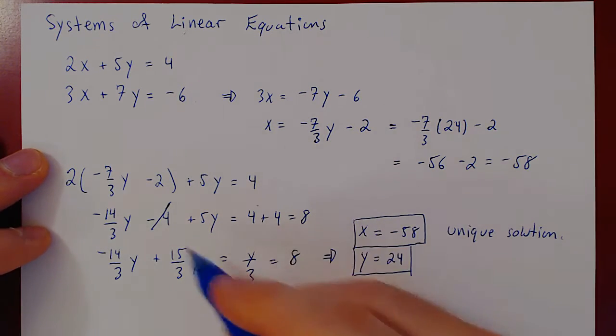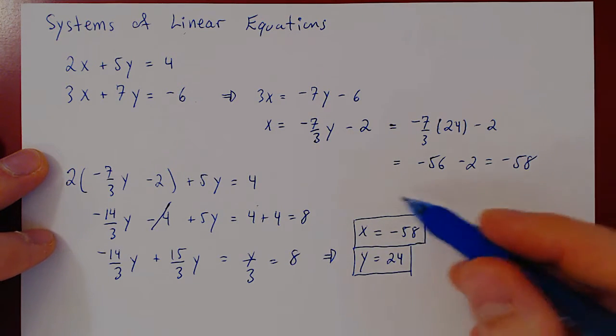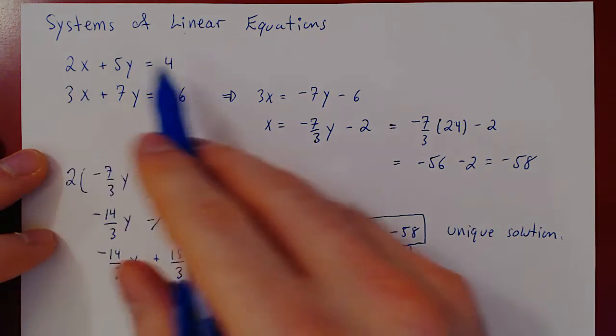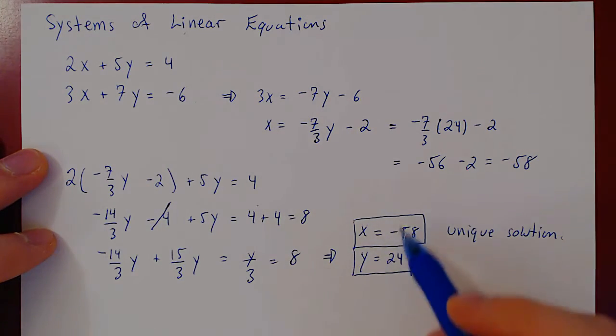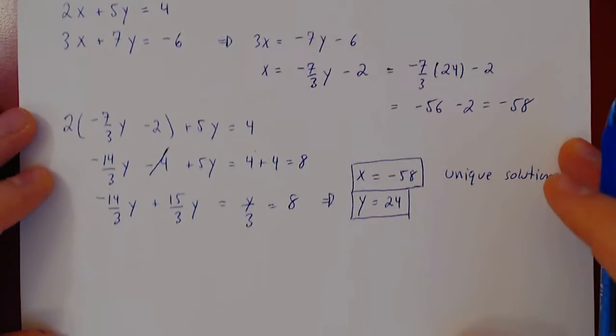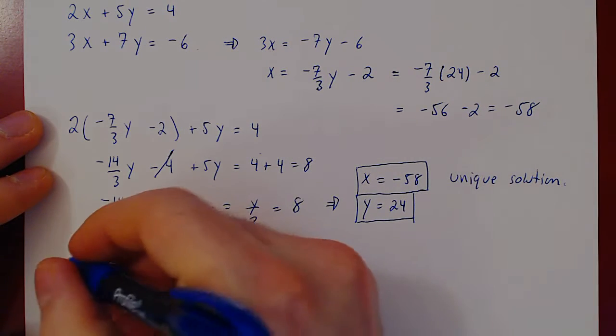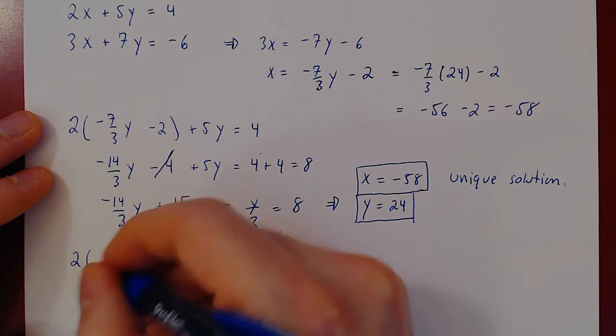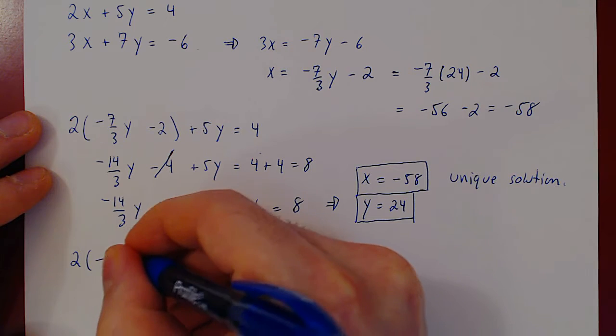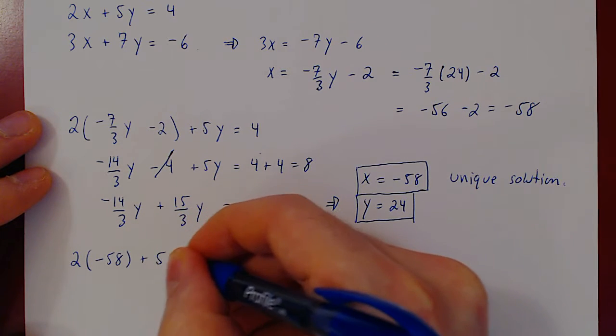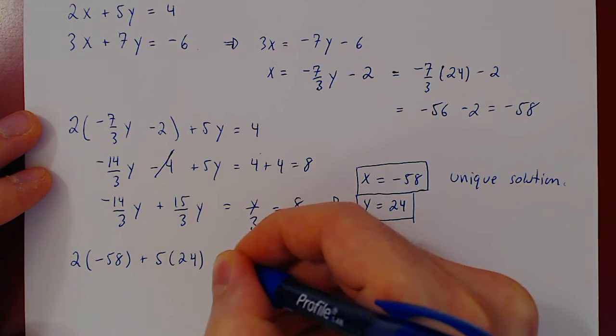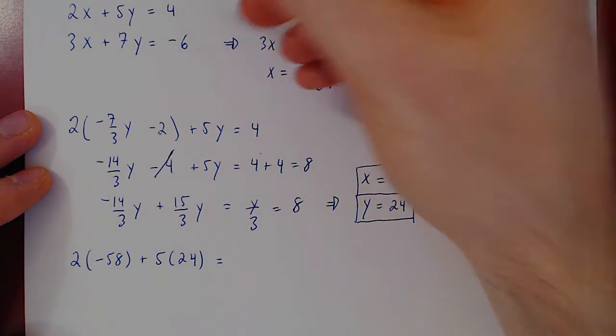Let us verify that we haven't made a mistake in our calculations. Let us substitute back in the original linear system and see that both equations are indeed satisfied. So we have 2 times x, which is negative 58, plus 5 times y, which is 24. Let's compute and see that we get positive 4.